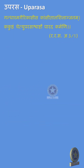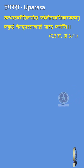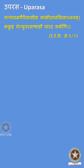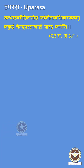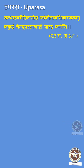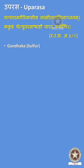The second category is Uparasah. Reference: Rasaratna Samuchaya Chapter 3 Shloka 1. The shloka says there are 8 Uparasahs which are useful in Parada Karma, that is processing of Parada. They begin with Gandhaka, that is Sulfur.